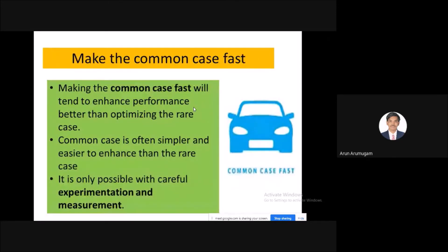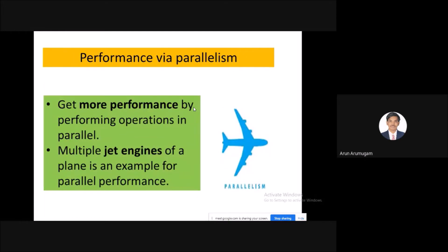The third one is the common case fast. It tends to invest in performance of the common case rather than optimizing the rare case. This is only possible with careful experimentation and measurement.